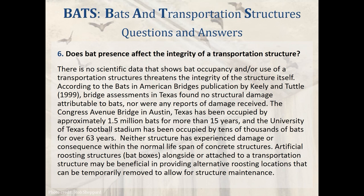Question 6: Does bat presence affect the integrity of a transportation structure? There is no scientific data showing that bat occupancy and/or use of a transportation structure threatens the integrity of the structure itself. According to the publication Bats in American Bridges by Keeley and Tuttle (1999), bridge assessments in Texas found no structural damage attributable to bats. The Congress Avenue Bridge in Austin, Texas has been occupied by approximately 1.5 million bats for more than 15 years, and the University of Texas football stadium has been occupied by tens of thousands of bats for over 63 years, with neither structure experiencing damage. Artificial bat boxes alongside or attached to a transportation structure may be beneficial in providing alternative roosting locations that can be temporarily removed for maintenance.